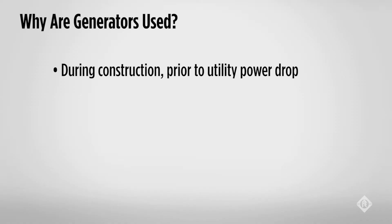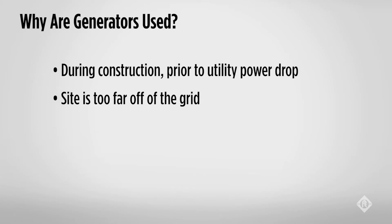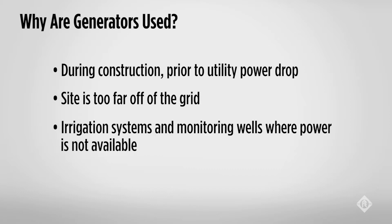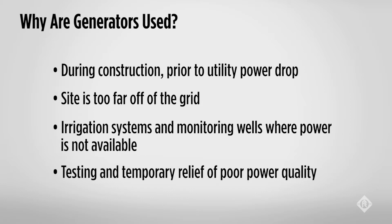During construction, water is needed for cement, mortar, and cleanup. Electricity is needed for power tools, and it may take weeks for a power drop to be made. Emergency power due to power outages is one of the more common reasons for generator use. A generator can also be used to determine if three-phase current unbalance due to installation or power supply issues can be addressed.